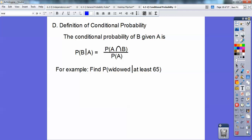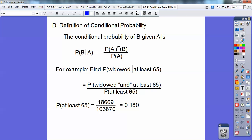For example, find the probability of a widowed woman given that she is at least 65. Now, we already did it before, but we're going to do it using this formula here. It equals the probability that she's widowed and at least 65, and then this one's going to be the probability that she's at least 65. We're going to do the bottom one first separately, the probability that she's at least 65.